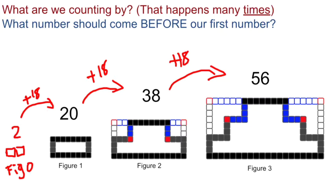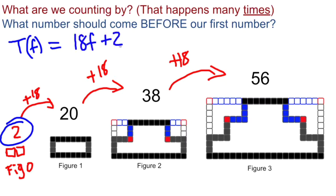That's the information that we need. What are we counting by? We're counting by 18. What number comes before the first number? Two comes before the first number. Now, this is how the formula works. Total for any figure number equals 18 times the figure number plus two.